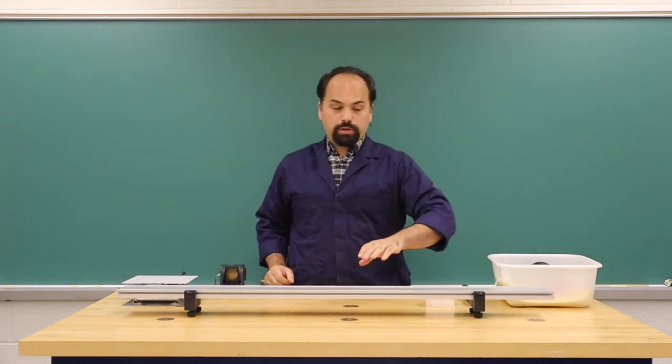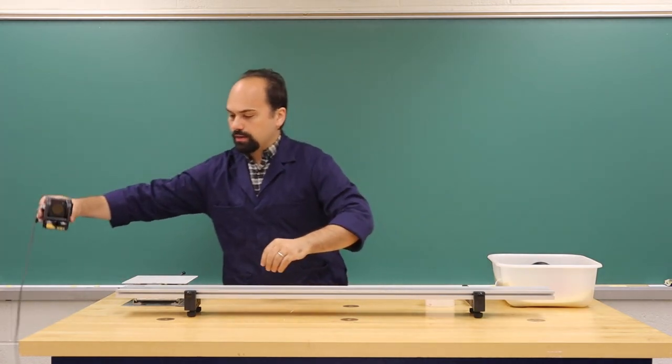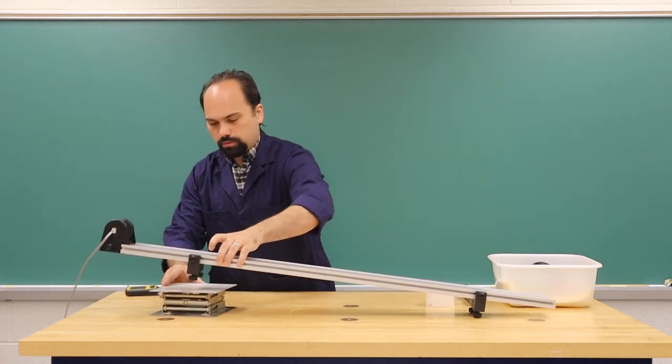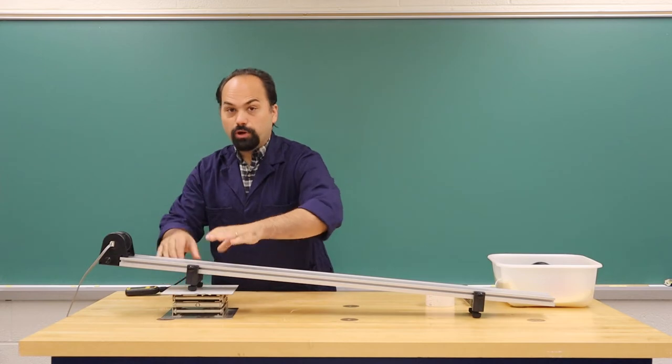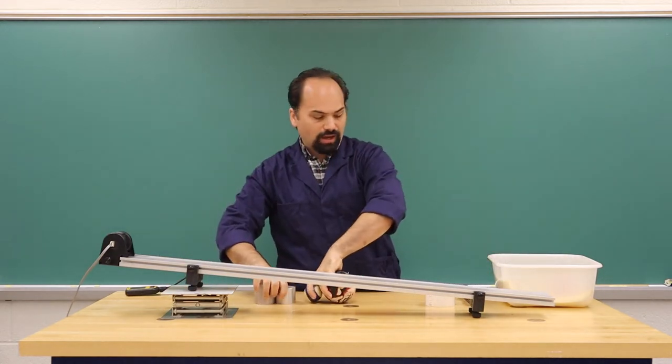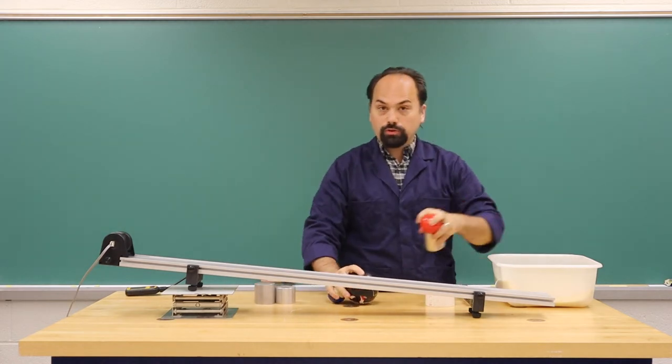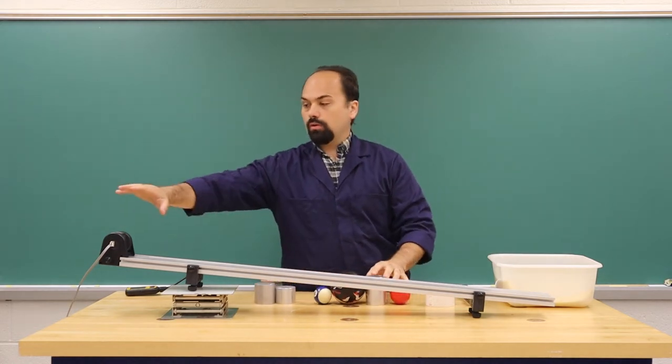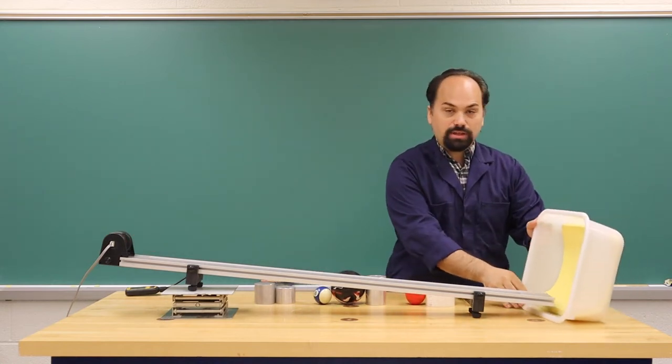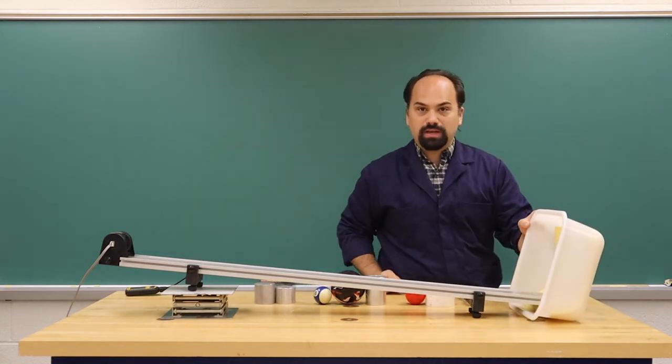In the second part of the lab, you will be taking your level track, adding a motion detector, and putting it up at an angle. We will then be rolling various objects down the track, watching their motion with the motion detector, and then catching them in your foam-lined bin at the bottom.